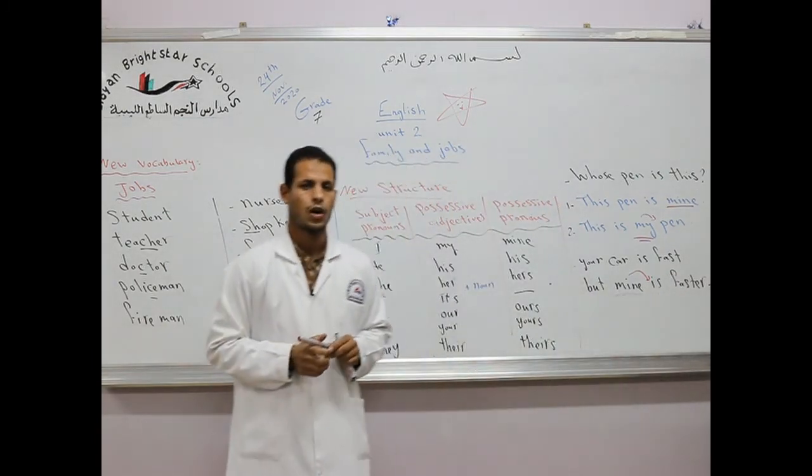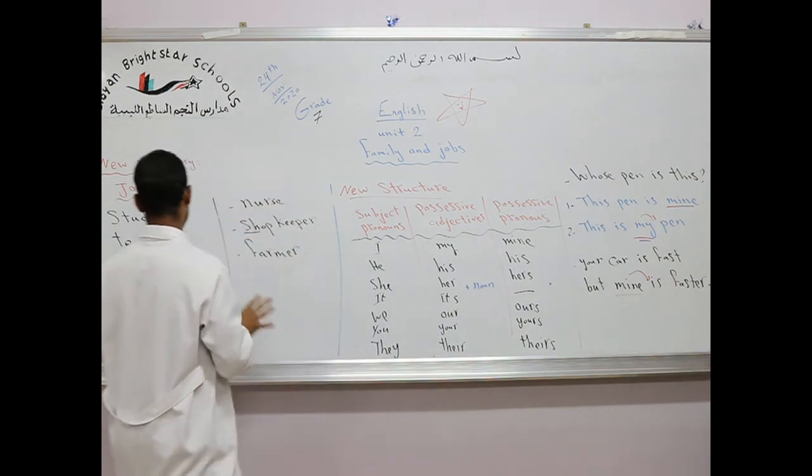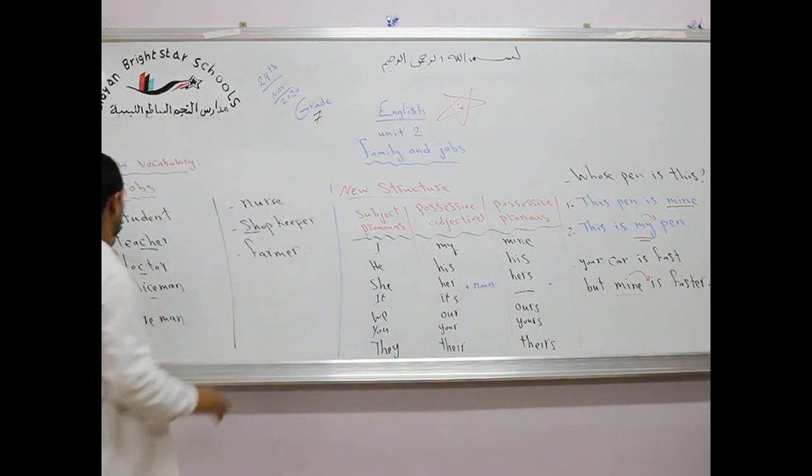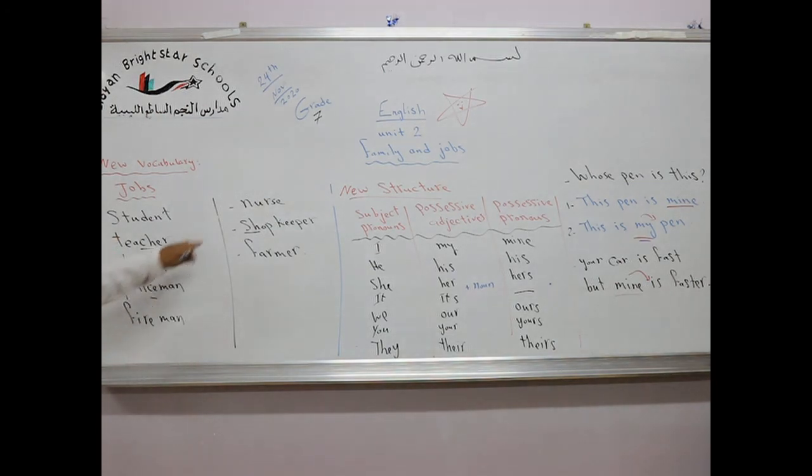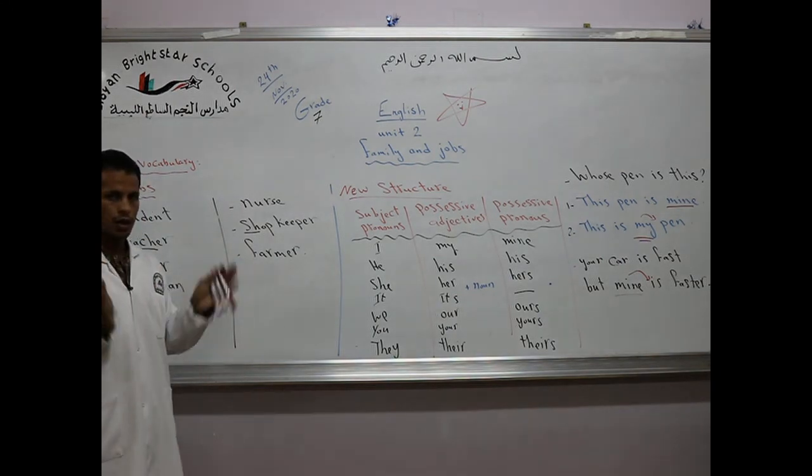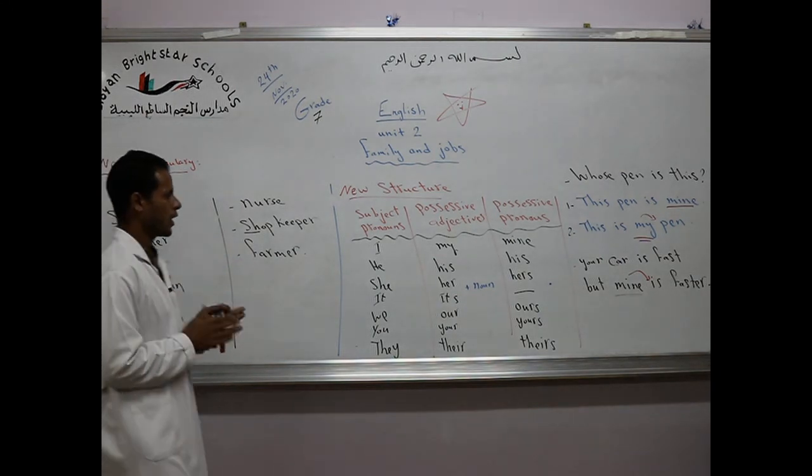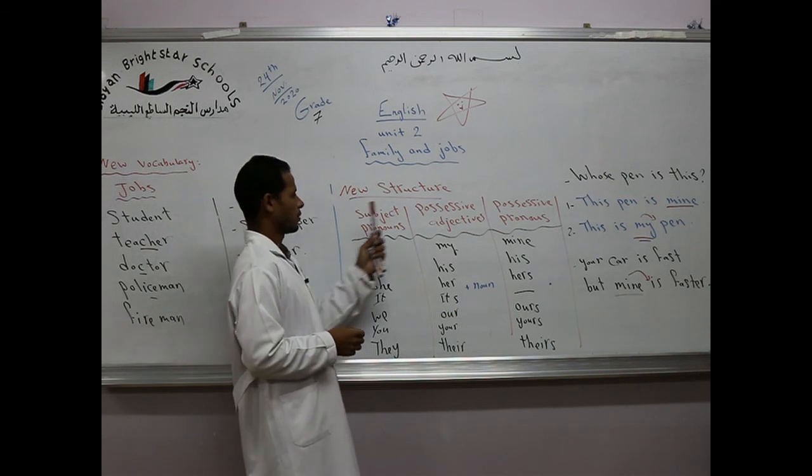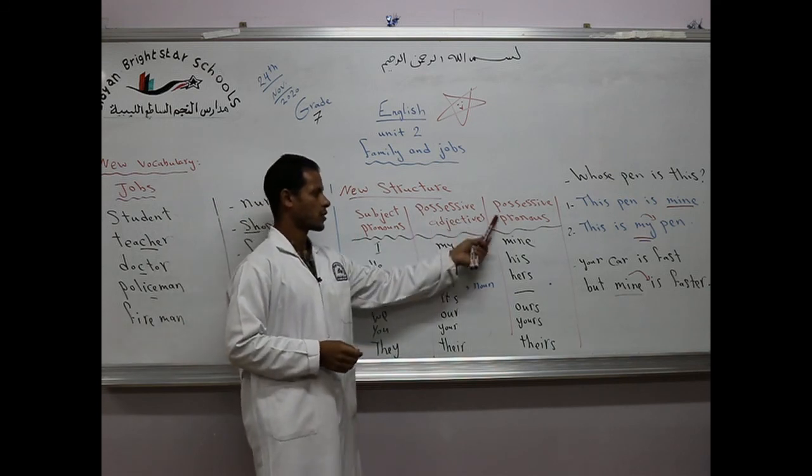Here we use mine, it followed by verb, not noun. Mine is faster. So our lesson talks about jobs: student, teacher, doctor, policeman, fireman, nurse, shopkeeper, farmer. These are our new jobs.